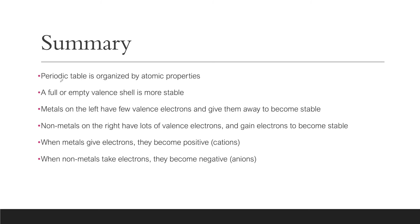And that's it for this video. So today we looked at how the periodic table is organized by atomic properties and by valence electrons. We also talked about how full or empty valence shell is more stable. How metals have few valence electrons, they want to give them away. And non-metals have lots of valence electrons and they want to gain electrons to be more stable. We also said that if a metal gives away its electrons, it's going to be positive or a cation. And when non-metals take electrons, they become a negative anion. I hope that video made sense for you. Thank you so much for watching. I will see you in the next video.